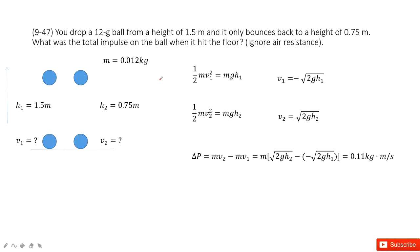So in this one, this model is very simple. We have a ball. This mass is given. And this ball just falls down, and then has velocity v1. v1 is pointing down, right? And the h1 is given.